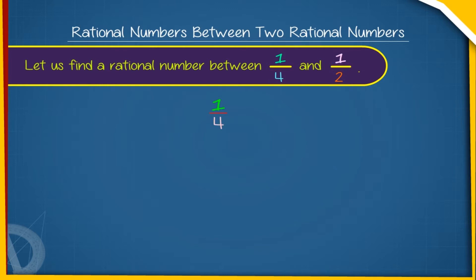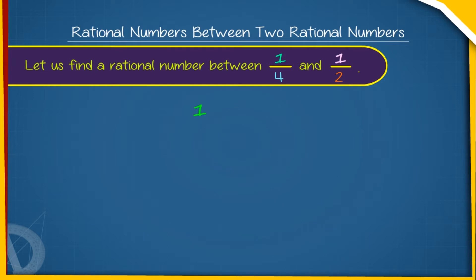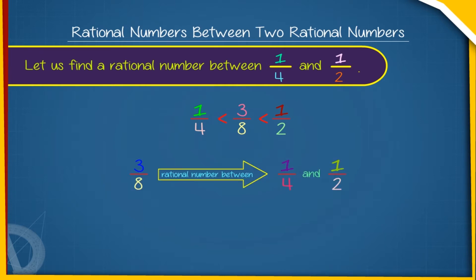Let us find a rational number between 1 by 4 and 1 by 2. We find 1 by 4 plus 1 by 2 upon 2. Now, 1 by 4 plus 1 by 2 equals 1 plus 2 by 4, equals 3 by 4. Therefore, 1 by 4 plus 1 by 2 divided by 2 equals 3 by 4 divided by 2, equals 3 by 8. Now, 1 by 4 is less than 3 by 8, which is less than 1 by 2. Hence, 3 by 8 is a rational number between 1 by 4 and 1 by 2.